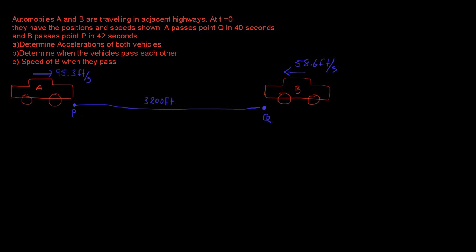This question involves the motion of two particles. Automobiles A and B are traveling in adjacent highways — automobile A is moving to the right, automobile B is moving to the left, and they have the positions and speeds shown. They're separated by 3200 feet. A starts at position P, and we're going to call everything going to the right our positive direction.